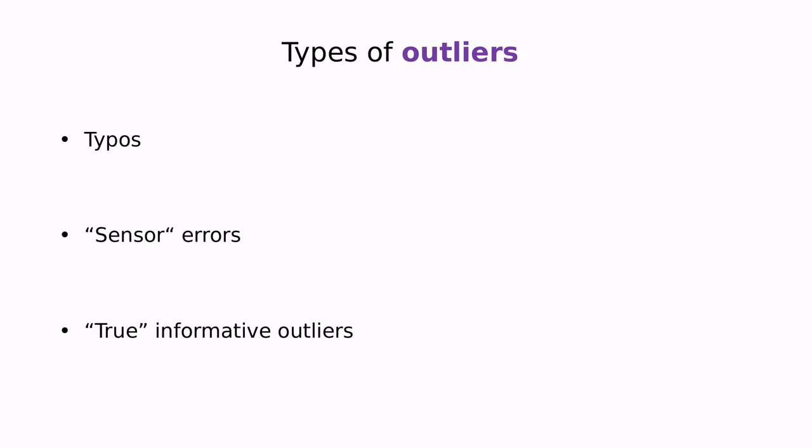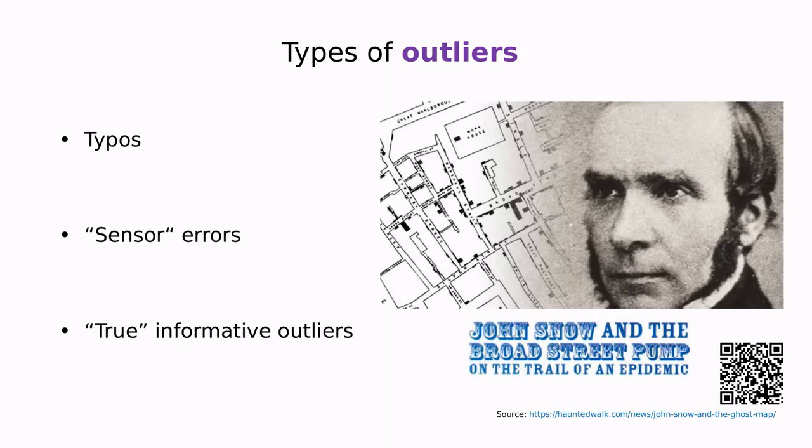Finally, the last type of outlier is the true informative outlier. Let me tell you a story. There was once upon a time a guy called Jon Snow, not this one, but this one, who was a London physician studying the birth of cholera in London. He had the theory that cholera was infectious because there was some infectious pathogen in water. The problem is that not only people in Broad Street had cholera, but in all the neighborhoods.